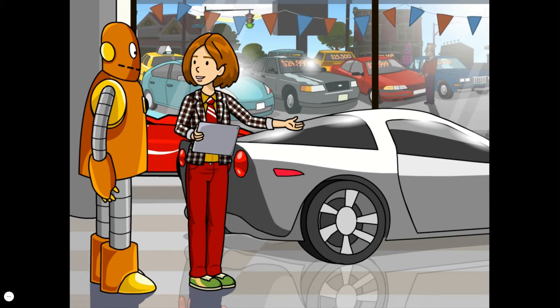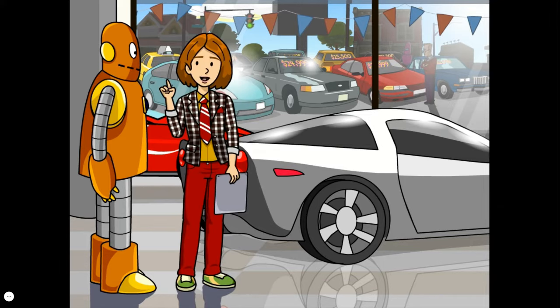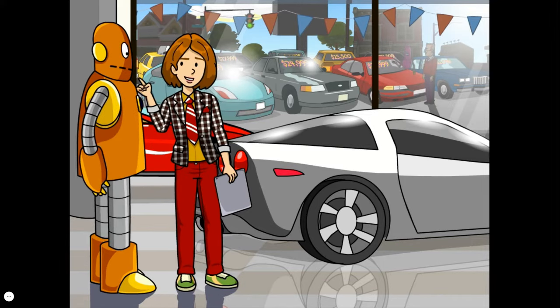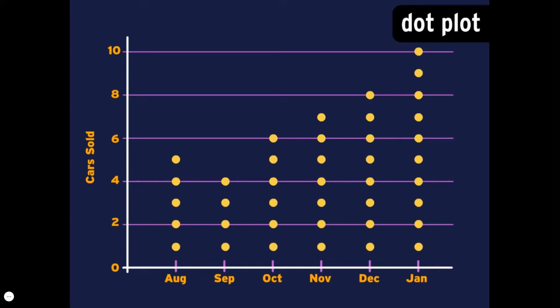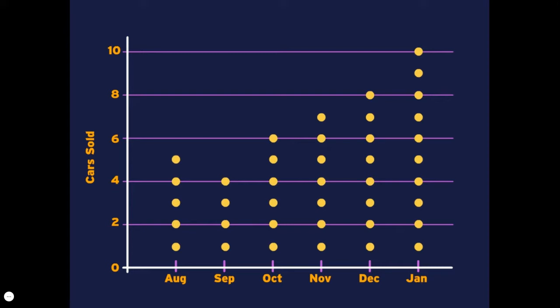But the Piranha isn't just quick — it's got the highest customer satisfaction rates in its class. They're selling like hotcakes, and supplies will not last. Just take a look at this dot plot. These are great for showing frequency, like how often a car is purchased. But instead of numbers, this graph uses dots. Each dot represents a car that was sold in the past six months. The y-axis shows the number of cars, and the x-axis shows the months.